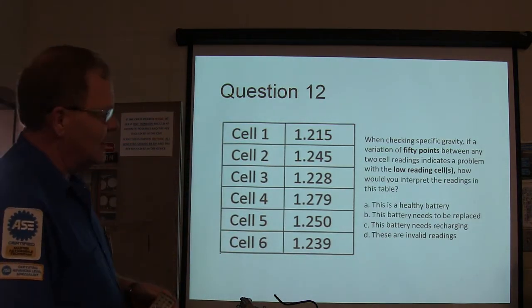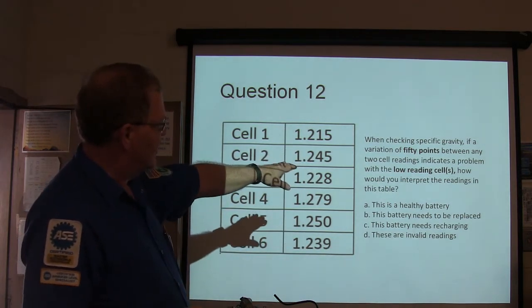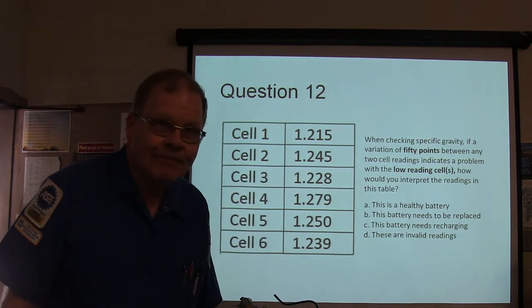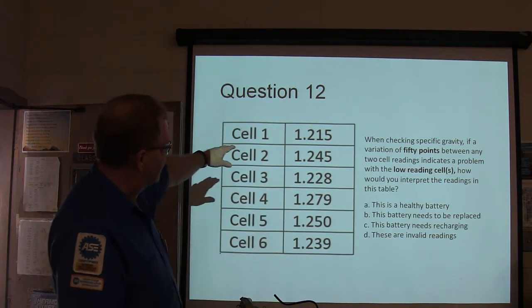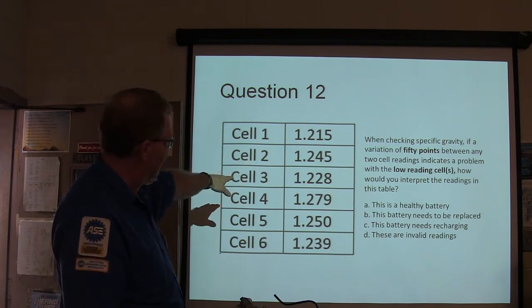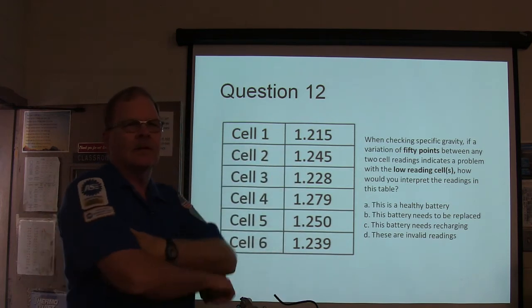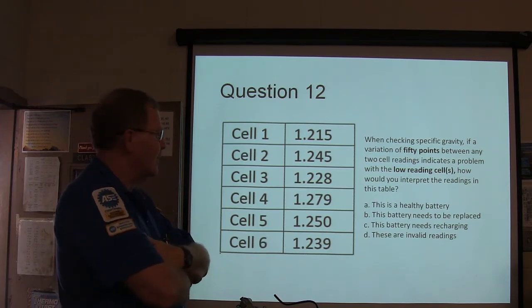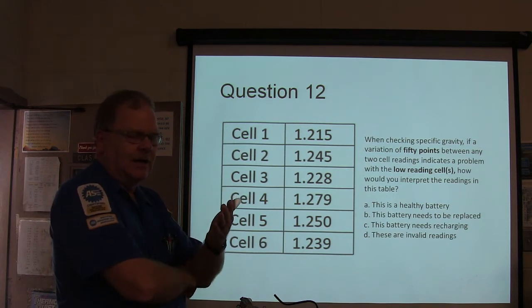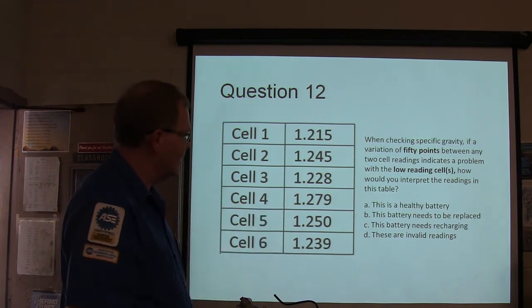Okay. We're checking specific gravity, and that's measuring, and that's comparing the weight of the fluid in the battery to water. A variation of 50 points between any two cell readings in case of a problem is low-reading cells. That's when you do it with a little hydrometer, you do it with a refractometer, you're looking at it, and you're getting these readings, right? Okay. Cell 1 is 1.215. Cell 2 is 1.245. Cell 3 is 1.228. Cell 4 is 1.279. What should we do based on these readings that we're getting right here? I think I would probably put a battery in there. I would have to go over that. I mean, that's just me talking. Maybe it might not be a bad idea to recharge it and check it. Just in case the acid is settled out at the bottom and charging it would actually heat that up and maybe mix it back up again. There's a bunch of different ways you can go on. Next question.